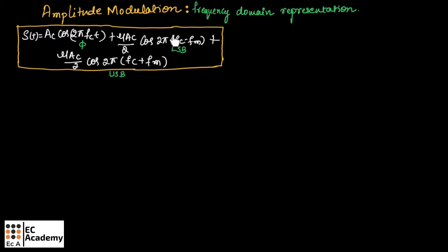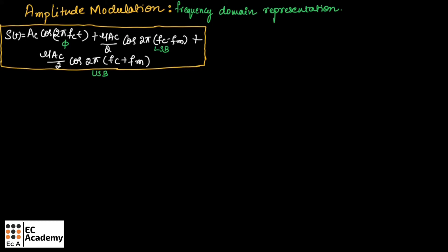This is the expression for amplitude modulated signal in time domain representation. This derivation we have done in our previous lecture. For this final expression, let us apply Fourier transform to obtain the expression in terms of frequency domain. For this equation, let us apply Fourier transform.